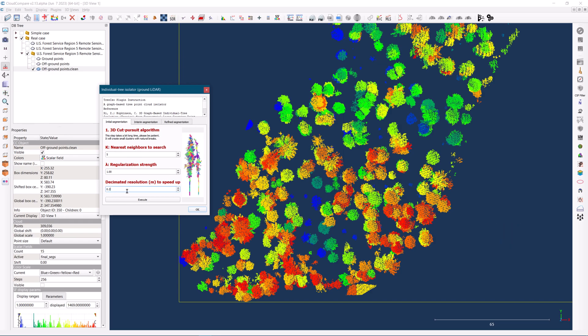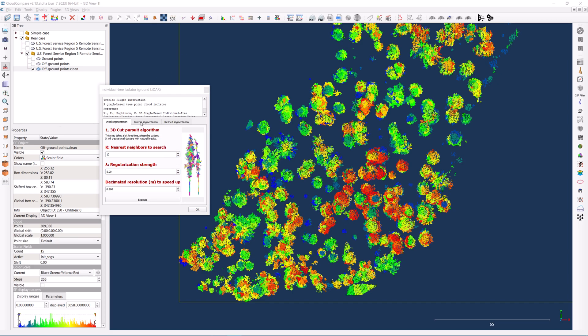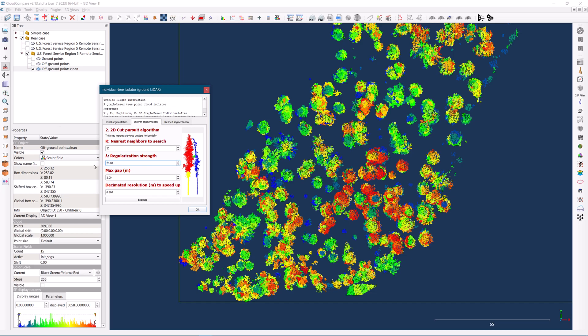Adjustments will be made to the decimation resolution and regularization strength in both the initial and intermediate segmentation steps. Increasing the decimation resolution helps expedite the processing time, while adjusting the regularization strength can enhance the accuracy of the tree isolation.